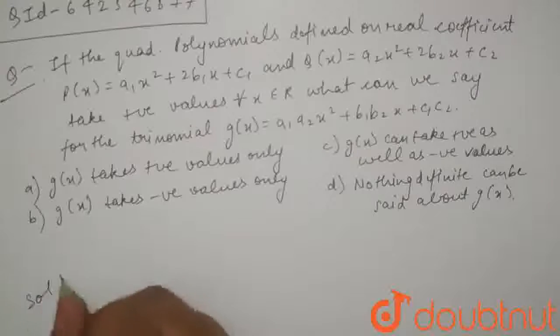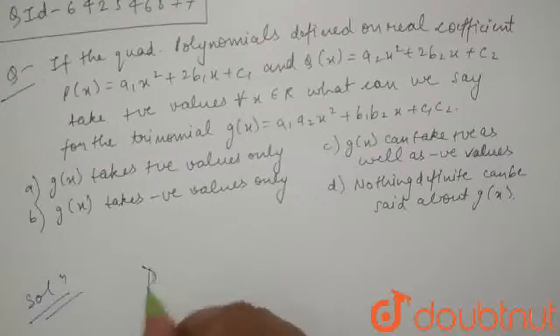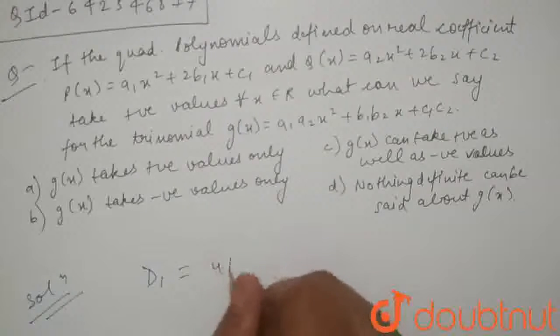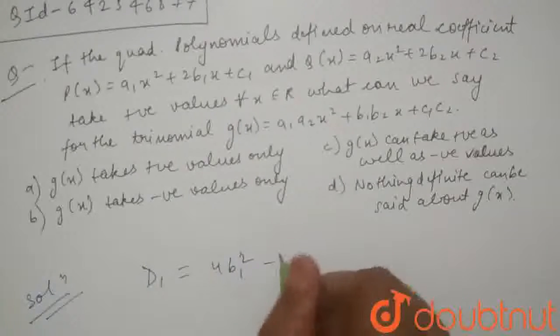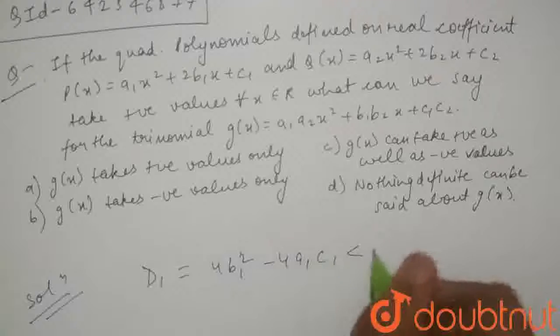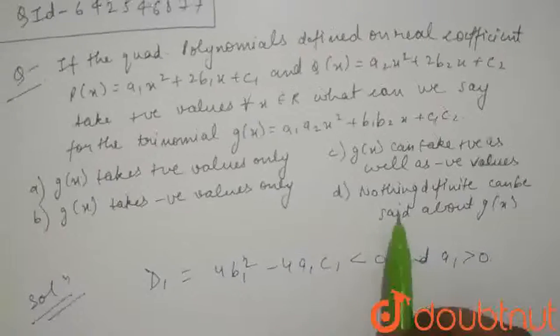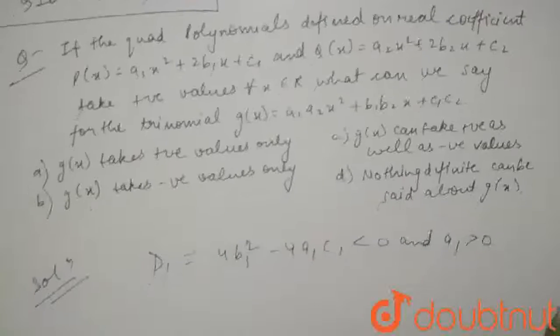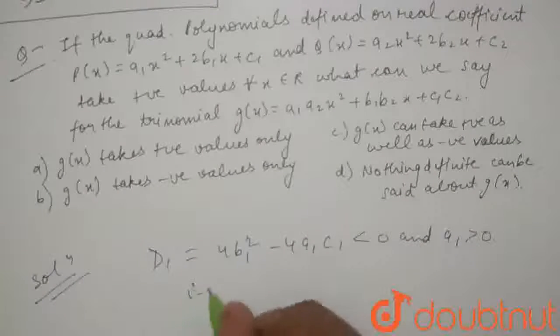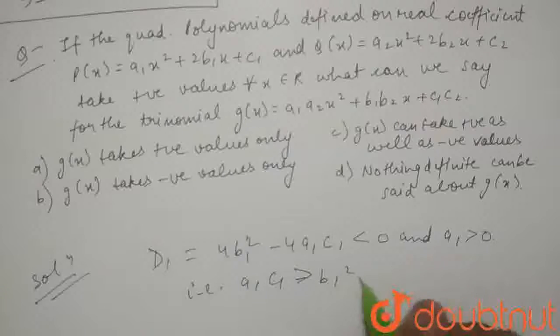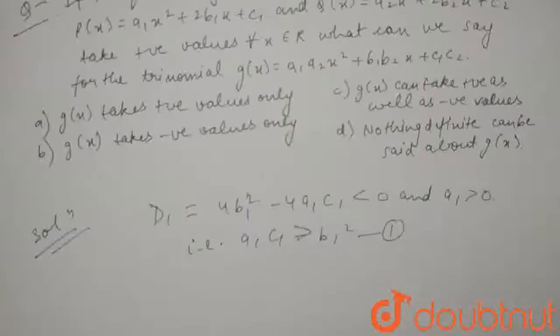So, let us see the solution. Firstly, D₁, the discriminant of this equation, will be 4b₁² - 4a₁c₁ < 0 and a₁ > 0. Since it takes positive values only, that is a₁c₁ > b₁². Let's say this is equation 1.